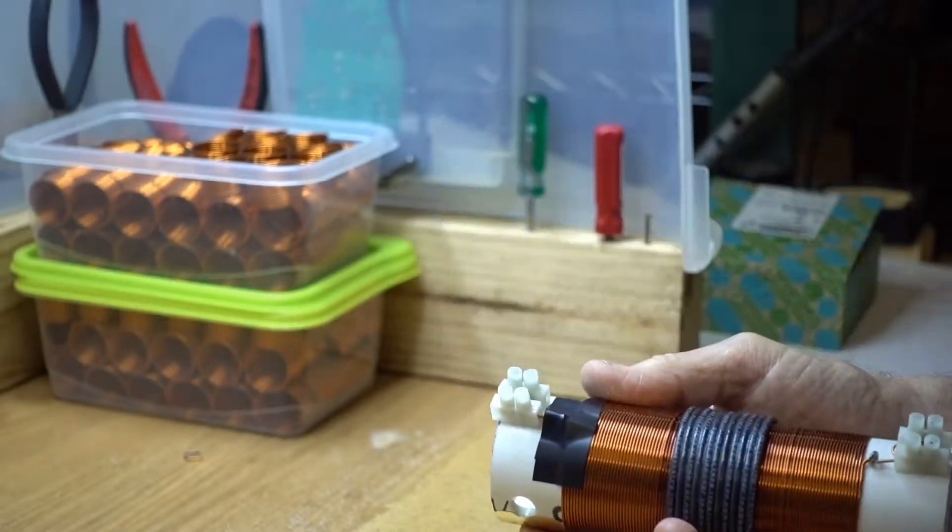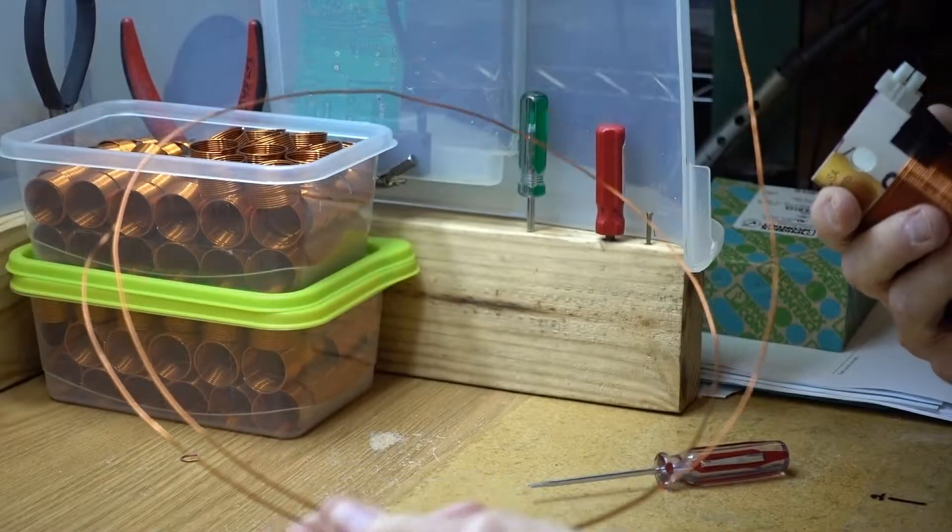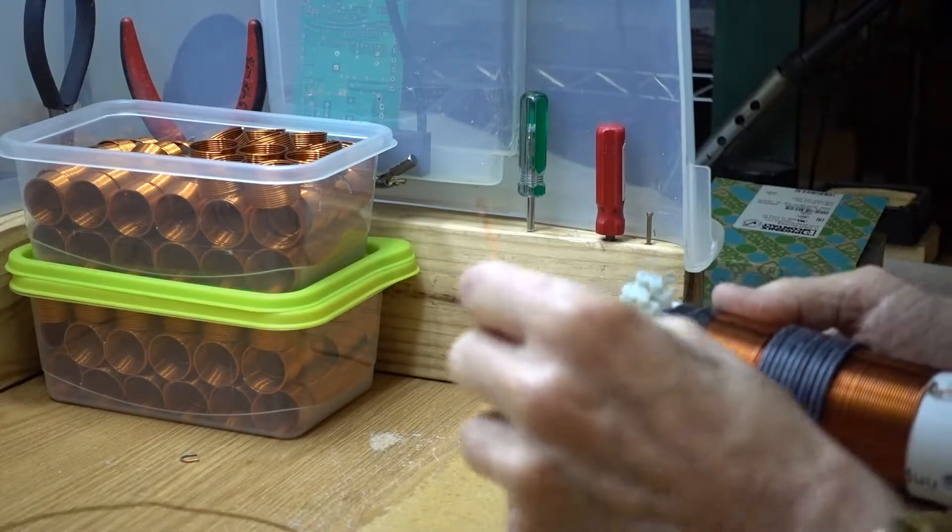Now that we've done that, we need about one and a half meters of copper wire. This is enamel insulated 18 gauge.